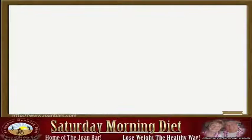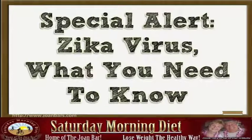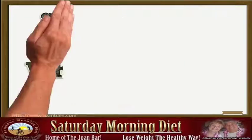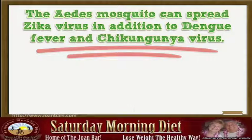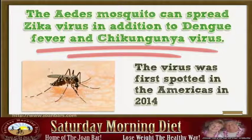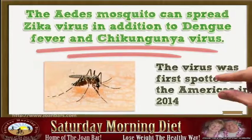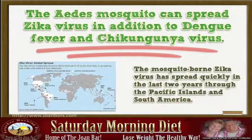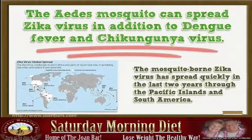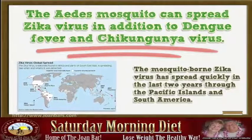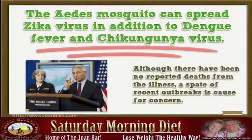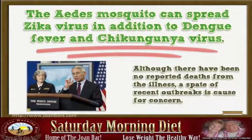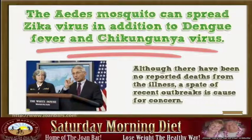Hi. Today I will talk about Zika virus which you need to know. The Aedes mosquito can spread Zika virus in addition to dengue fever and chikungunya virus. The virus was first spotted in the Americas in 2014. The mosquito-borne Zika virus has spread quickly in the last two years through the Pacific Islands and South America. Although there have been no reported deaths from the illness, a spate of recent outbreaks is cause for concern.